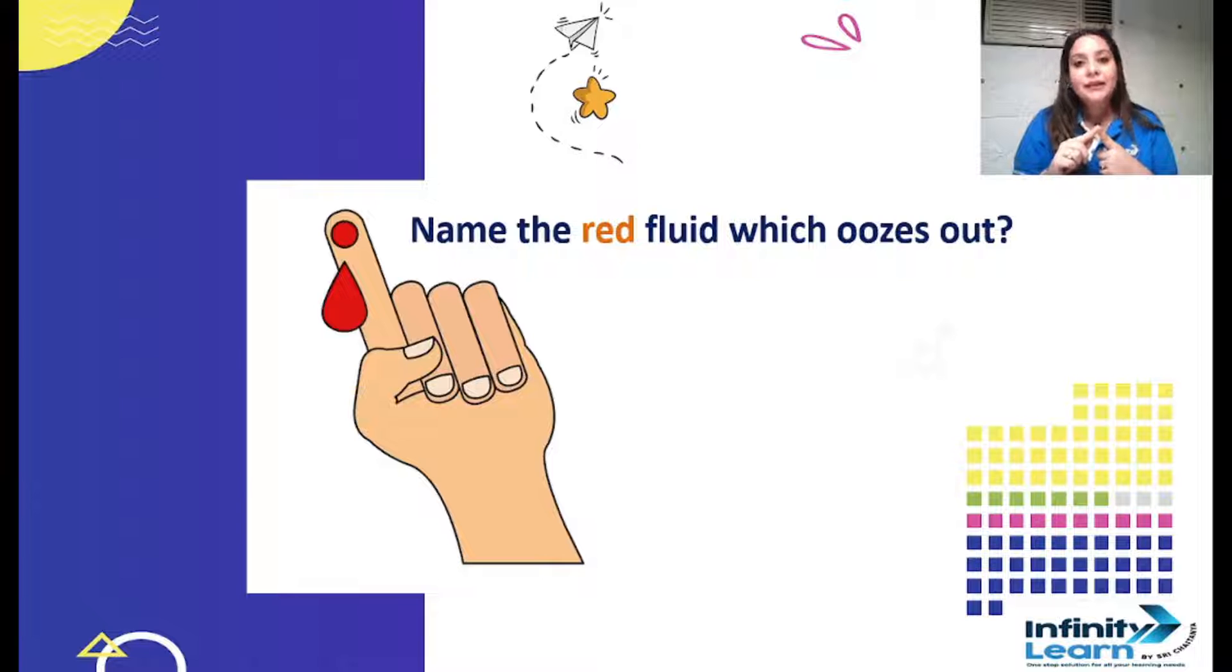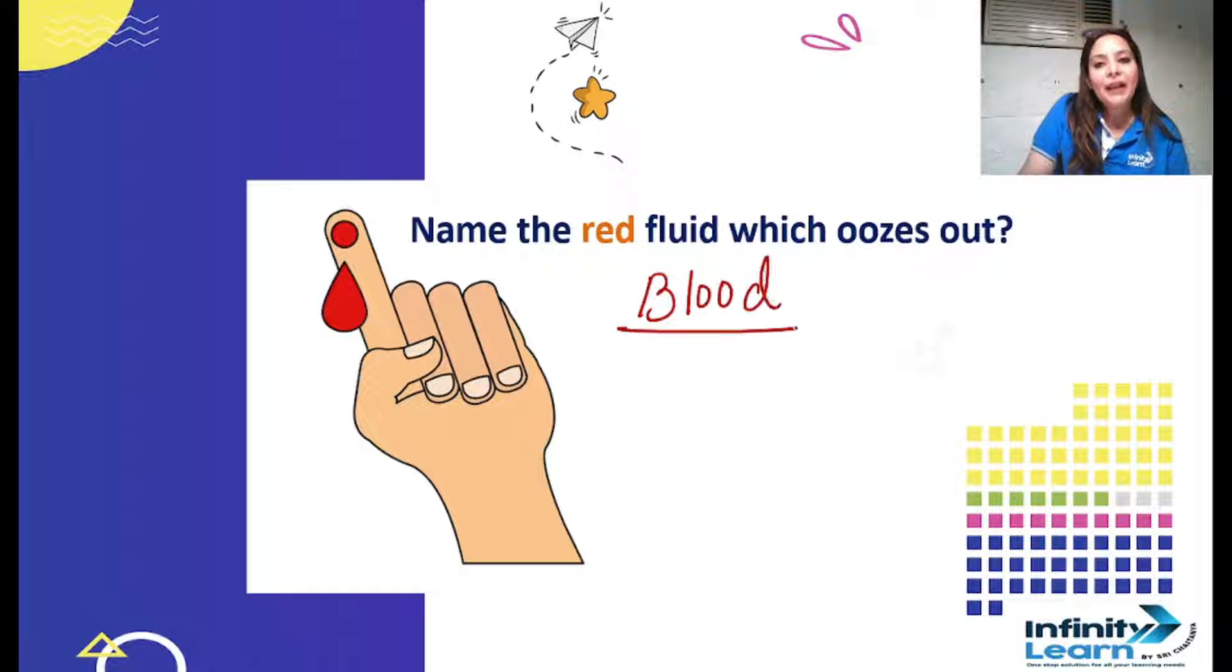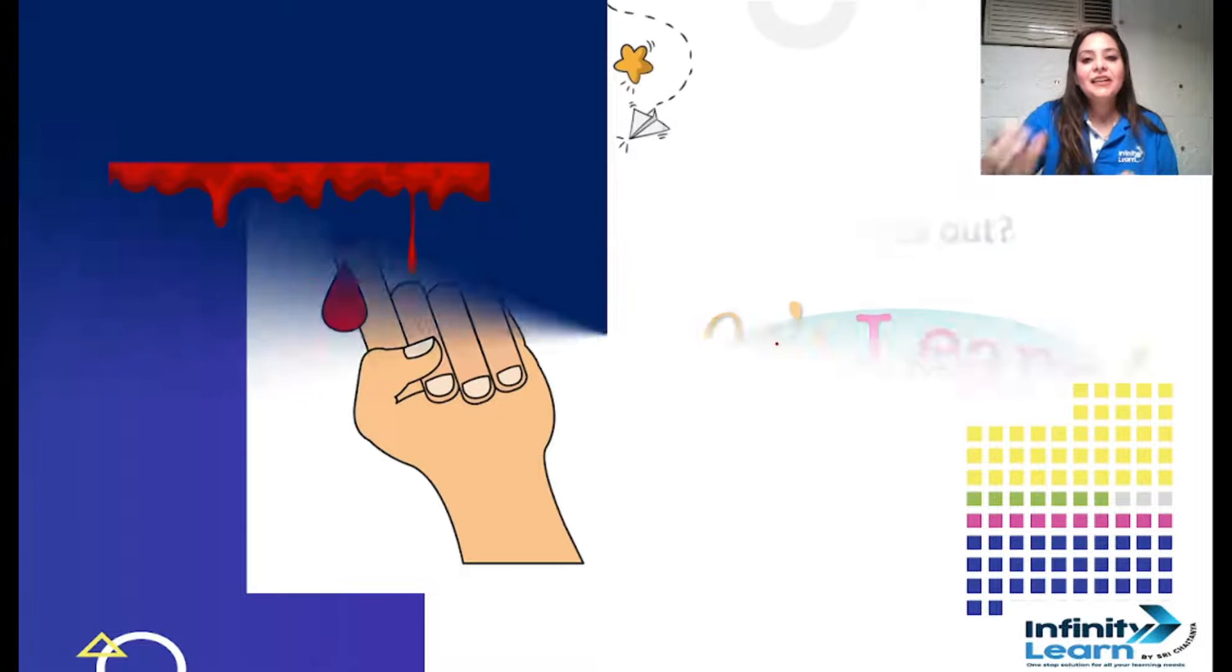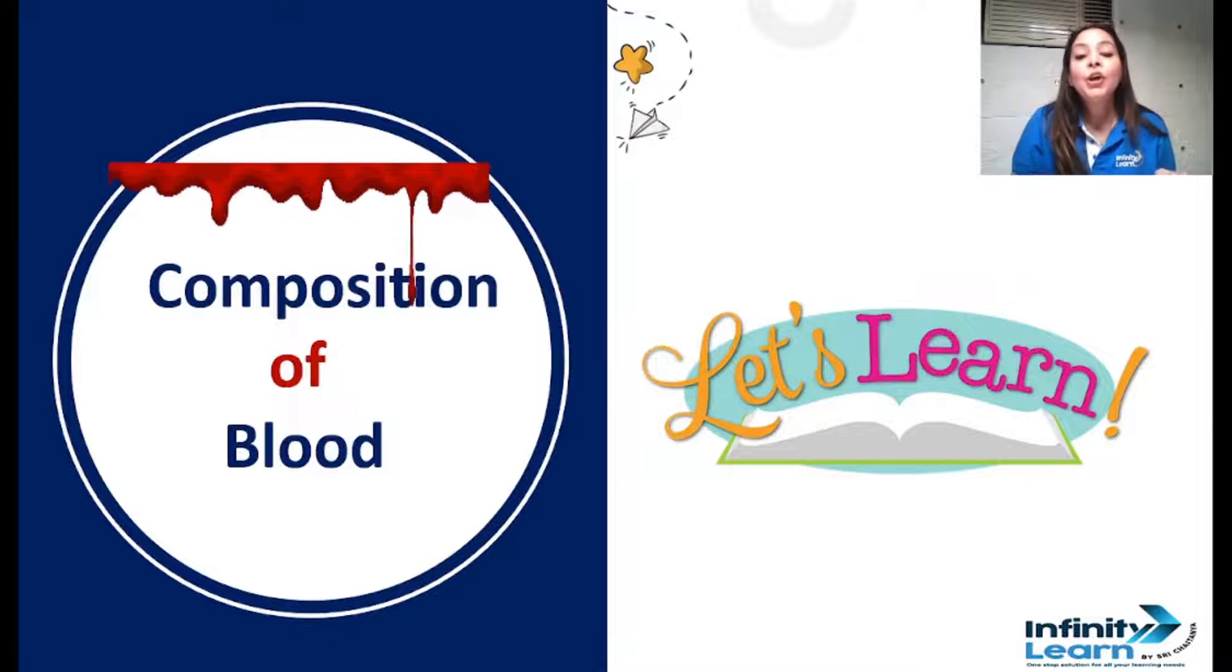When your skin ruptures a little deep, you must have seen that there's a red fluid which oozes out. There is a red fluid which oozes out when our skin gets punctured. Yes, you are right, this red fluid is none other than blood, and this is going to be our main topic.